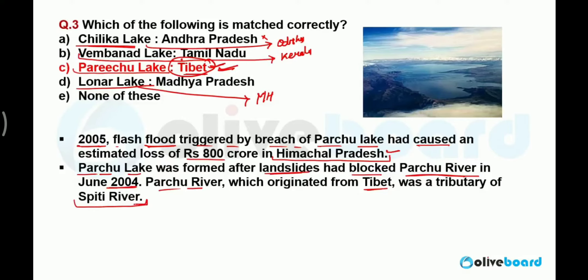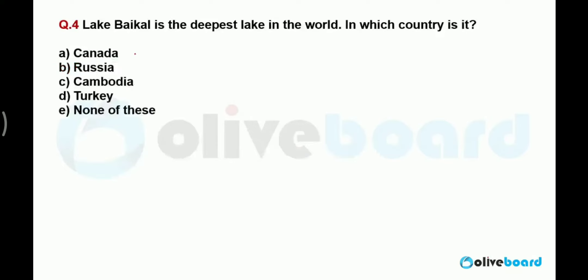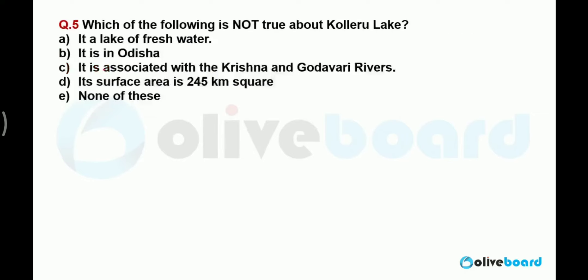Lake Baikal is the deepest lake in the world. It is located in Russia — specifically in Siberia, the part of Russia situated in Asia. So in examinations, if the answer options mention Siberia, that will be your answer for the location of Lake Baikal.